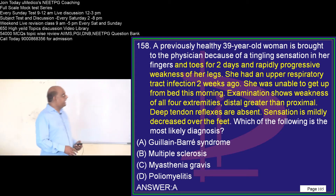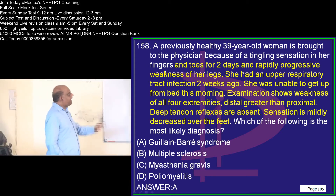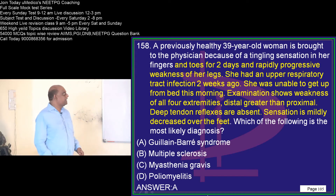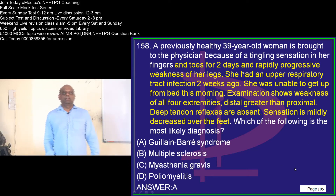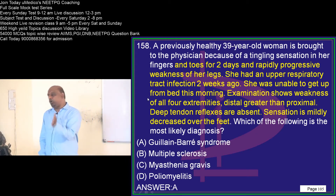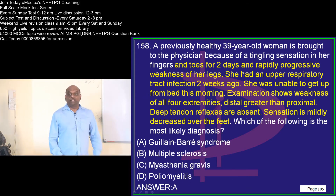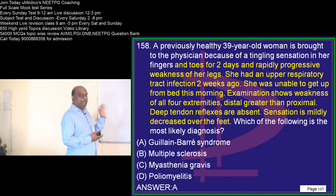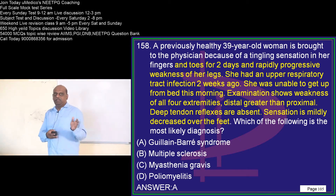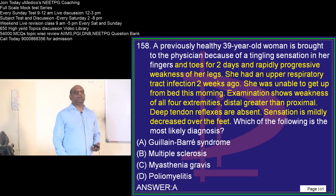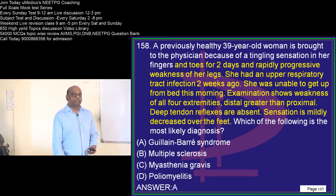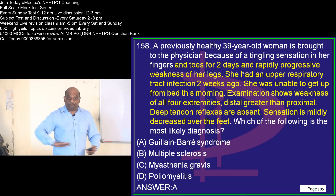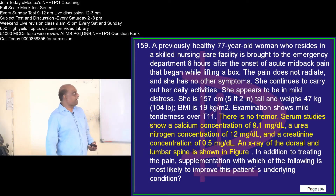A previously healthy 39-year-old presents after an upper respiratory infection 2 weeks ago with weakness of all 4 extremities and absent deep tendon reflexes. The most likely possibility is post-infectious demyelinating polyneuritis, which is the name given to Guillain-Barré syndrome. Typically, with a background of infection, if someone develops acute flaccid paralysis, consider Guillain-Barré. Consider poliomyelitis if it is asymmetrical, and transverse myelitis if there is definitive sensory loss.